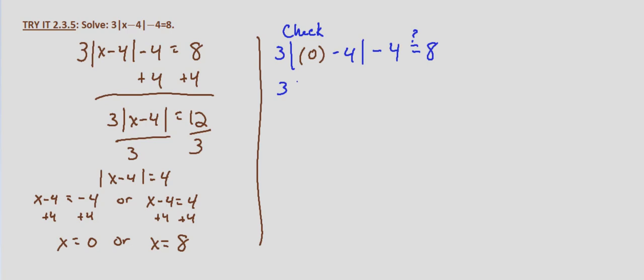So 3 times the absolute value of negative 4, minus 4. That's 3 times 4 minus 4, which is 12 minus 4, which does indeed equal 8. So x equals 0 checks as a solution.